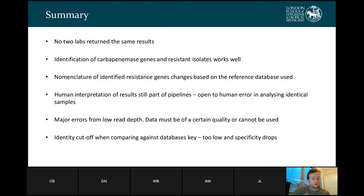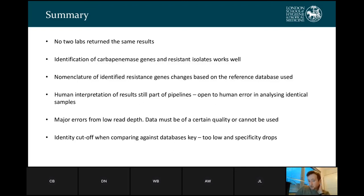In summary, no two labs returned the same results from any of the genes or the resistance predictions. The identification of carbapenemase genes and resistant isolates worked quite well. The nomenclature differences — where we saw different genes reported — were mainly driven by whatever reference database was used and chosen by the people running these pipelines. Human interpretation is still part of the pipelines, making results open to human error. The major errors were from low read depth; data must be of a certain quality or it cannot be used. And there was an identity cutoff issue when comparing against databases — whenever people drop their identity cutoffs too much, you get a drop in specificity as well.